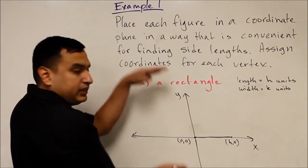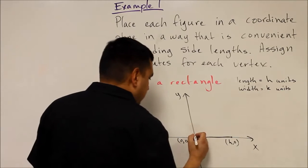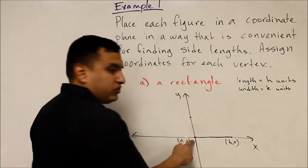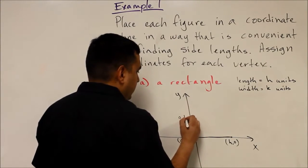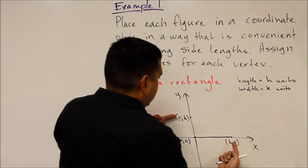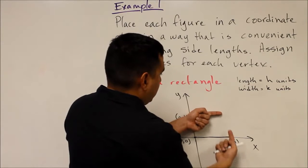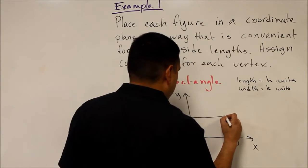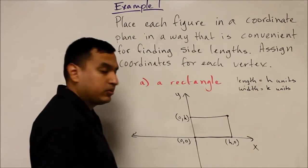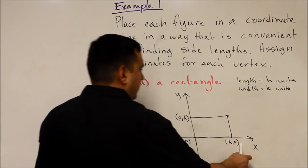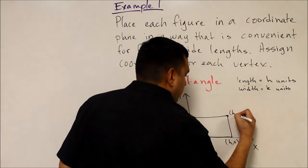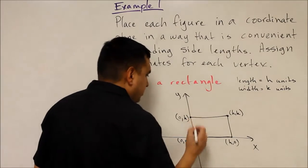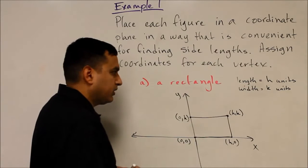To get the width, we go up the y-axis k units, so that point is (0, k). Then, where those two points meet horizontally and vertically, they intersect — going h units right and k units up — giving us the coordinate (h, k). So that's the rectangle in general terms, using (0, 0) as one of the vertices, with coordinates (0,0), (h,0), (0,k), and (h,k).